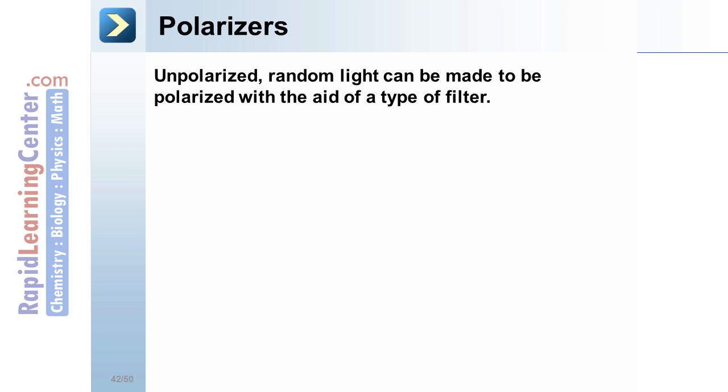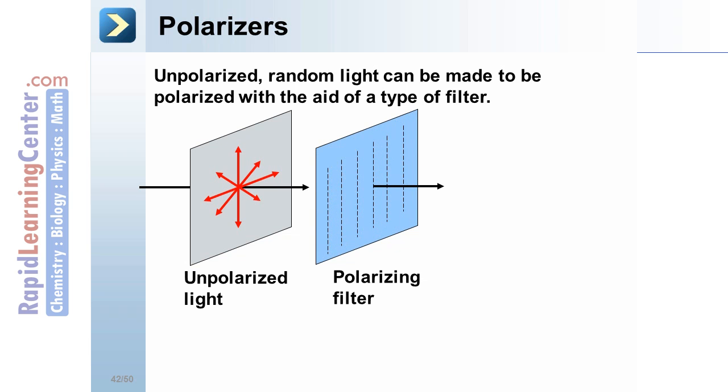Polarizers. Unpolarized or random light can be made to be polarized with the aid of a type of filter. Take our unpolarized, random light here, pass it through a polarizing filter, and the result out the other side is polarized light.